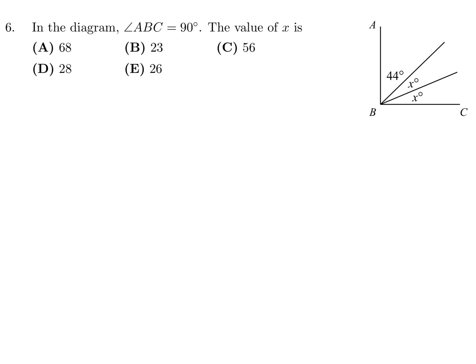In the diagram, angle ABC is 90 degrees. The value of X is? Since the angle is 90, all of those add up to 90: 44 plus X plus X equals 90. So 2X equals 46, and therefore X is 23. The answer is B.